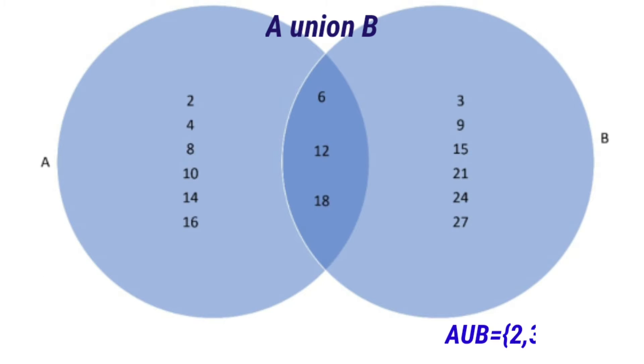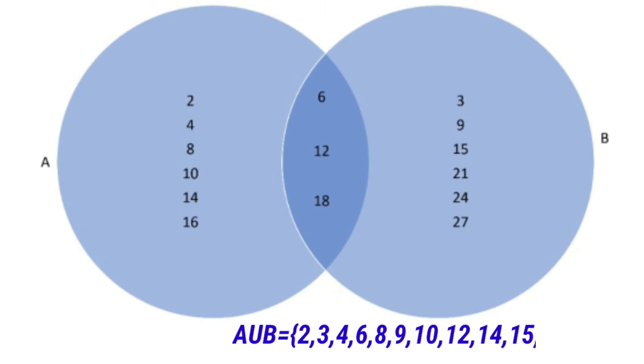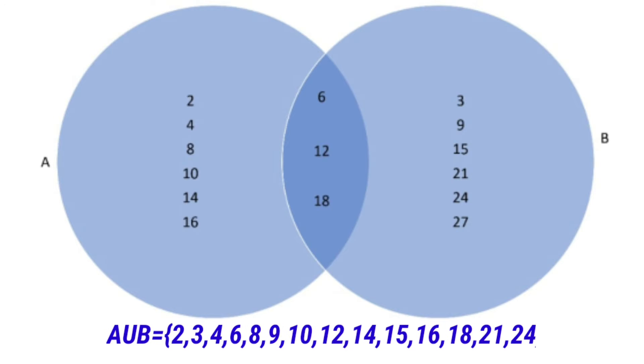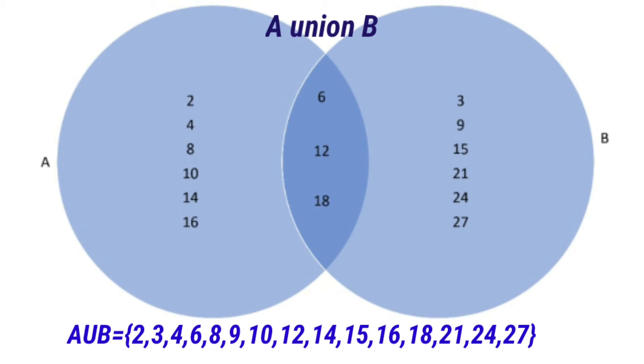Now, learn these operations through Venn diagrams. Let's observe the Venn diagram. A union B means the set of all elements in either A or set B, or both in sets A and B.